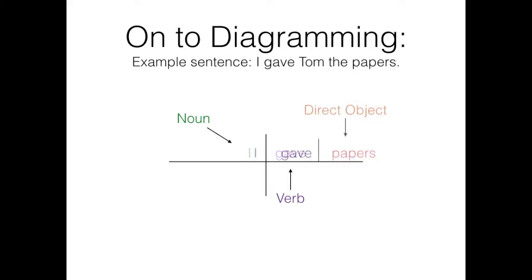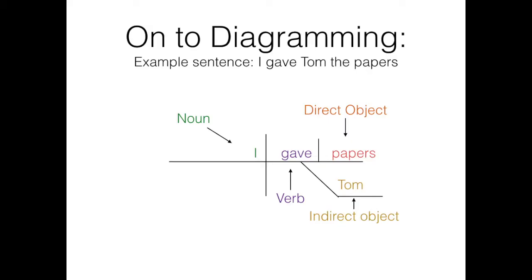We can then ask ourselves who or what I gave to find our direct object, which in this case is papers. We can now ask ourselves to whom or for whom I am giving the papers, which gives us the indirect object Tom. The indirect object is diagrammed on a line that comes down from the verb of the sentence. It is typically written horizontally to distinguish it from adverbs. So far, what we've found looks like this.